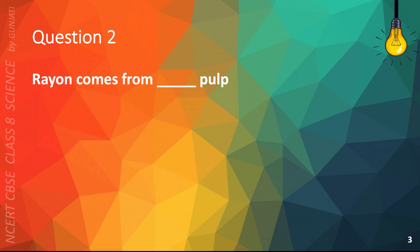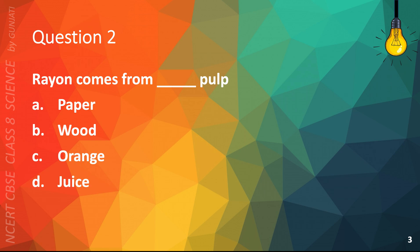Question 2. Rayon comes from blank pulp. A. Paper, B. Wood, C. Orange, or D. Juice. The correct answer is B. Wood.